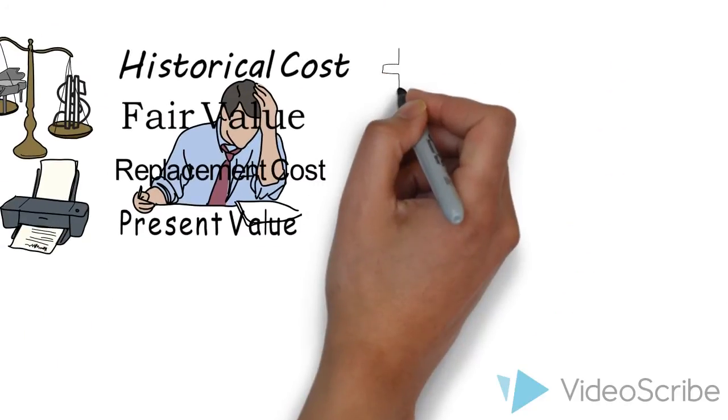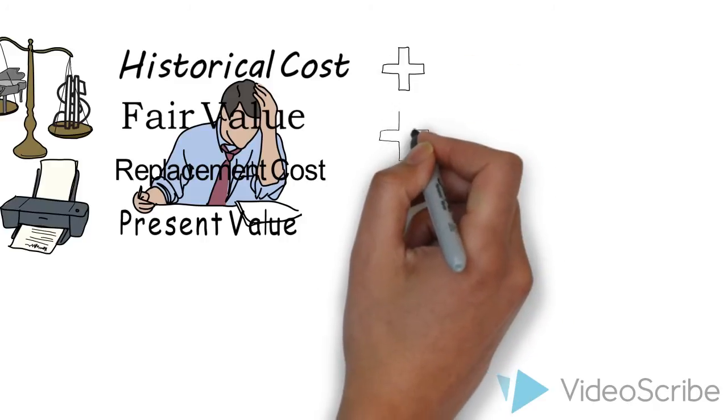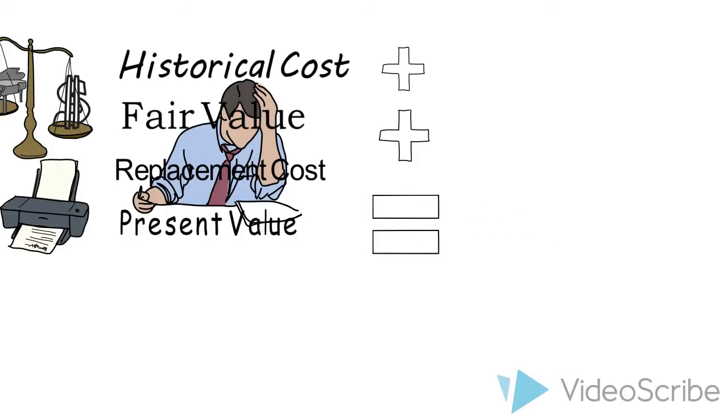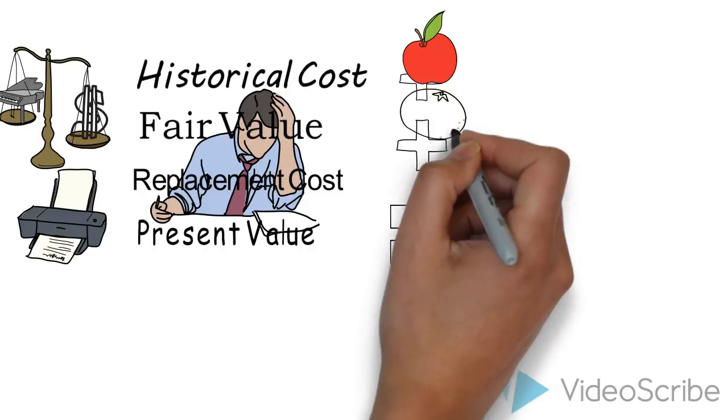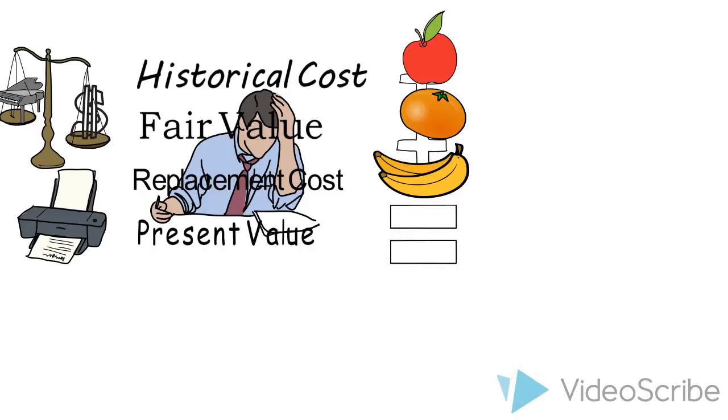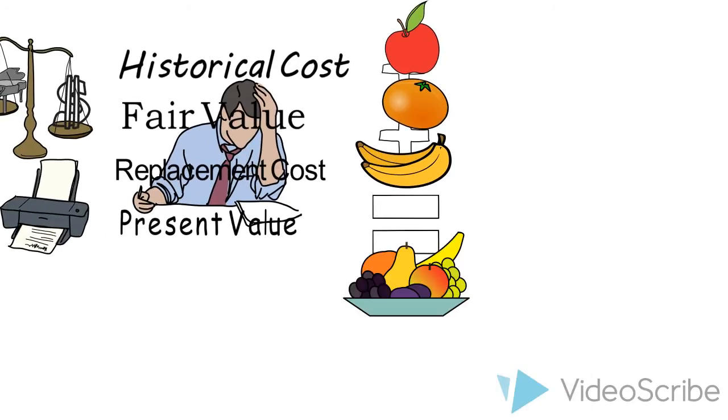But the alternative is to have different measures on our financial statements. And if we take different measurement approaches, then we're adding historical cost and current replacement cost, net realizable value, present value together. So that when we have the sum, how do you interpret it? Five oranges and three apples is neither eight oranges nor eight apples. It's a fruit salad.